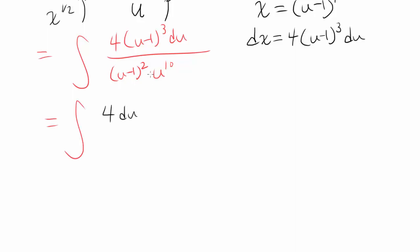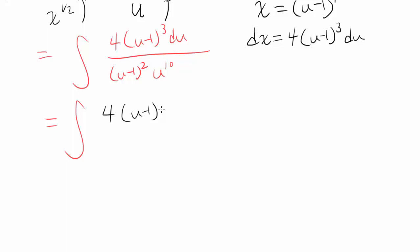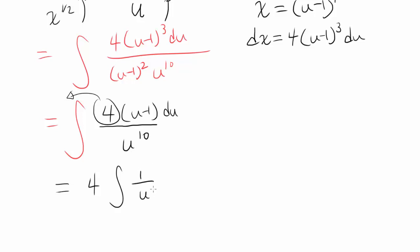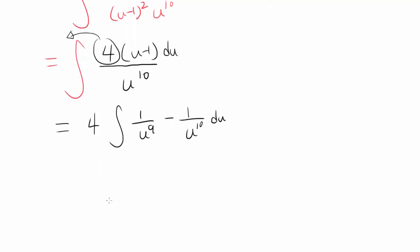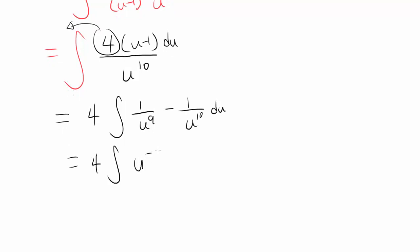So you have 4 du. Let's replace dx with 4 times u minus 1 cubed du, replace square root of x with u minus 1 squared, and replace this crazy part with u to the 10th. You have 4 and u minus 1 cubed divided by u minus 1 squared, which is just u minus 1 up top, and you're dividing by u to the 10th. Let's get the constant 4 outside the integral, giving u minus 1 divided by u to the 10th, which is the same as u over u to the 10th minus 1 over u to the 10th, or 1 over u to the 9th minus 1 over u to the 10th du.